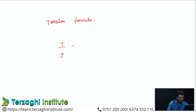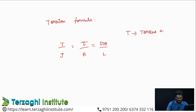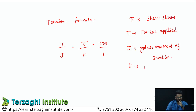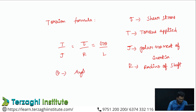The key torsion equation is: T/J = τ/R = Gθ/L. Here T is the applied torque, J is the polar moment of inertia, τ is the shear stress, R is the radius of the shaft, G is the shear modulus, theta is the angle of twist, and L is the length of the shaft.